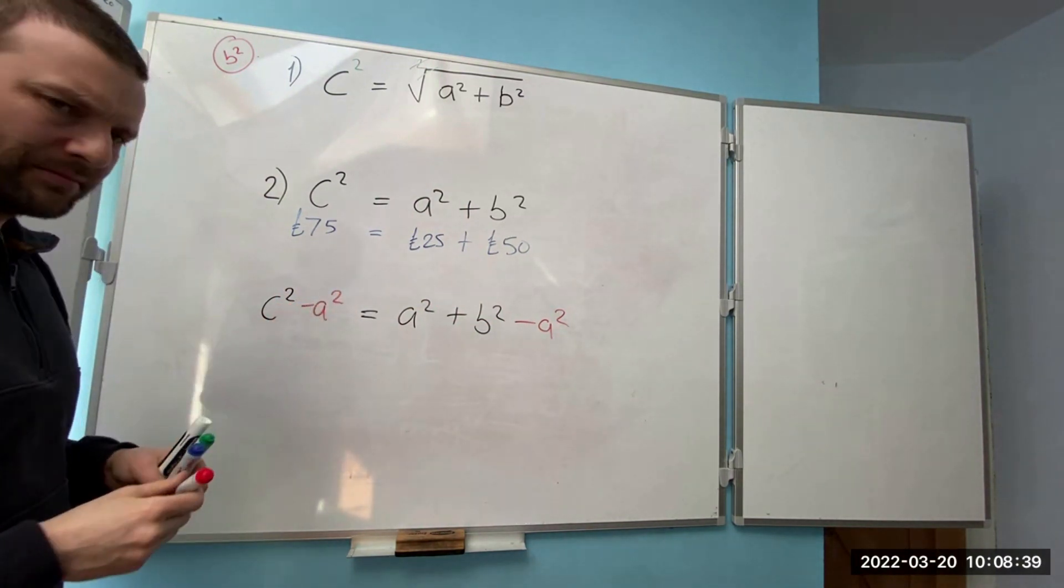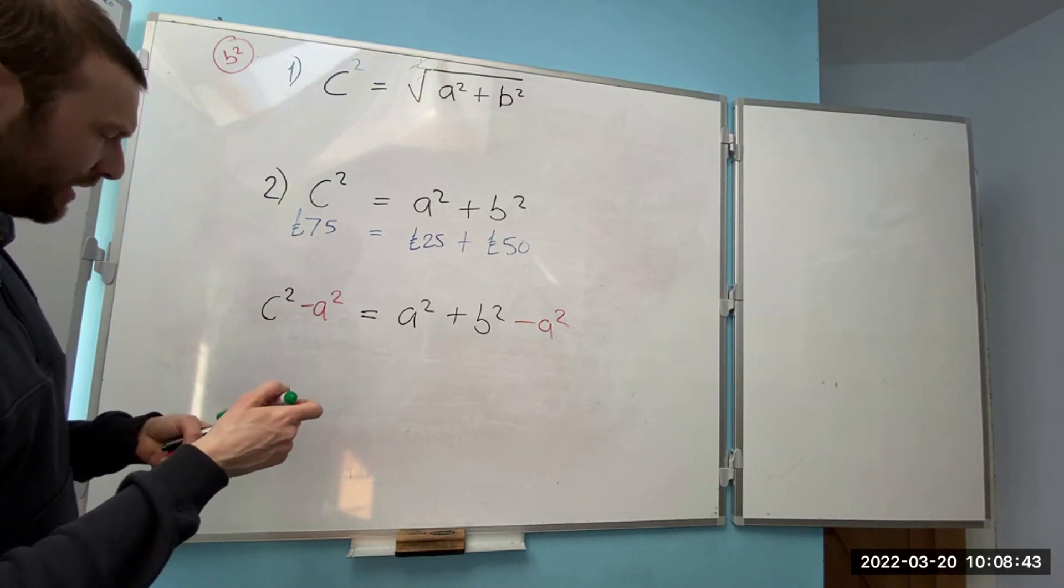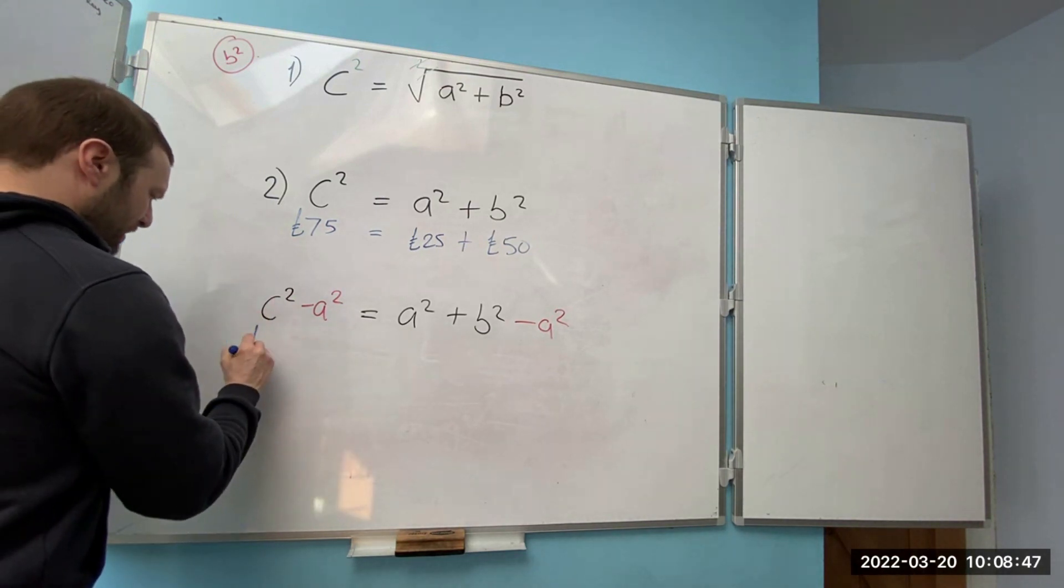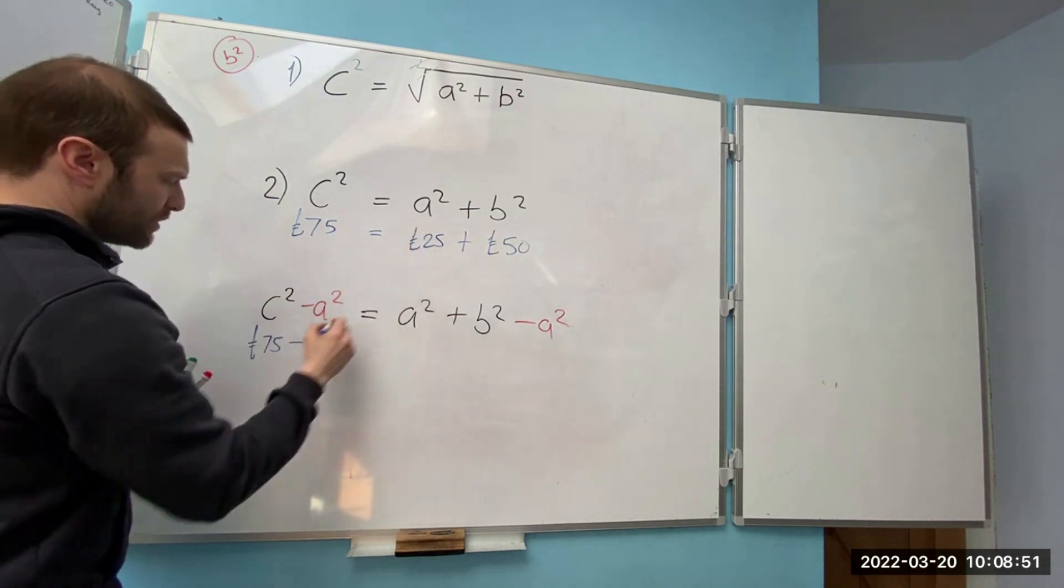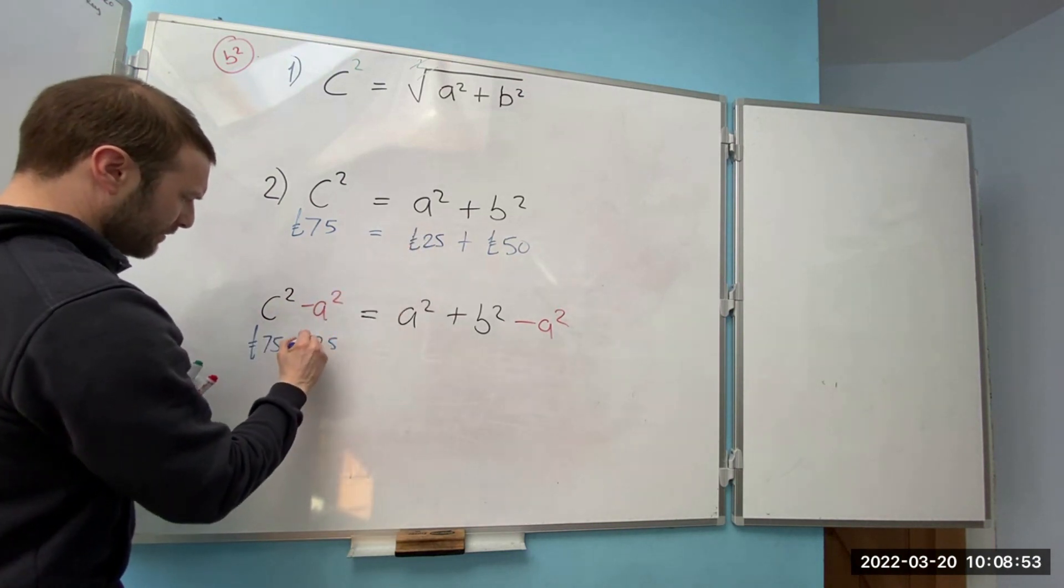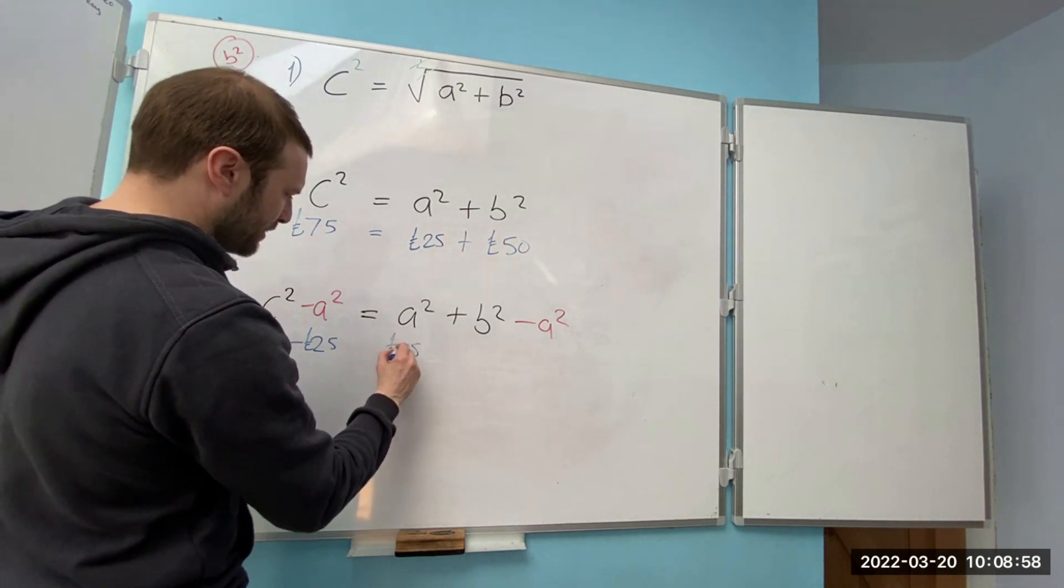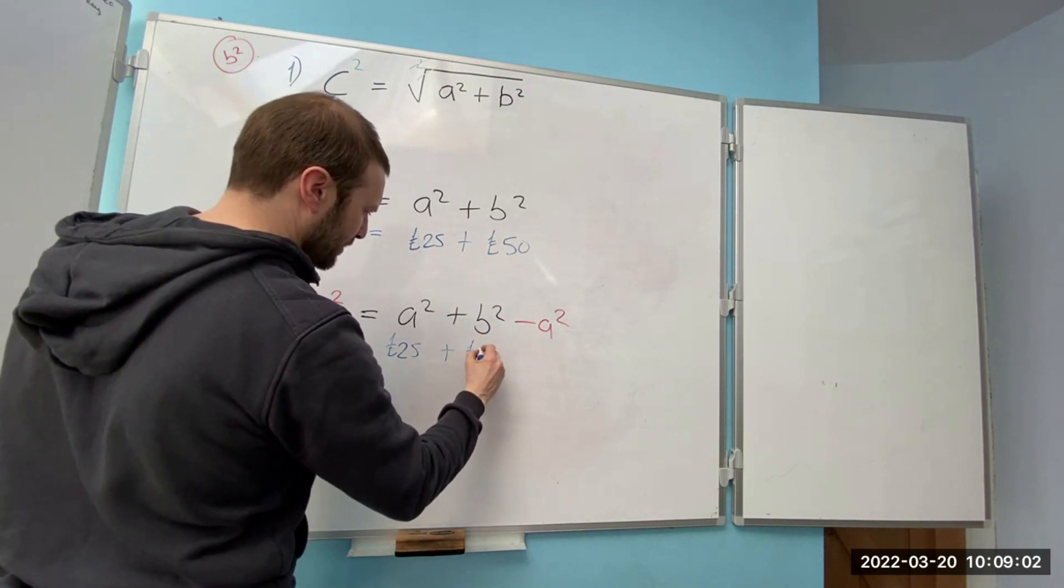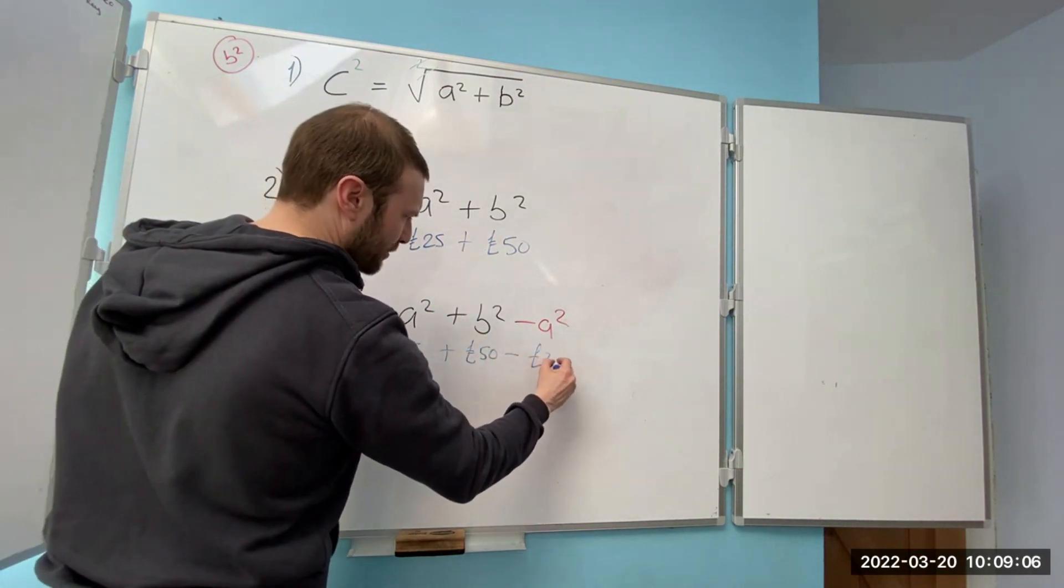Because then if I put that all in we've got 75 pounds minus 25 pounds equals 25 pounds plus 50 pounds minus 25 pounds.